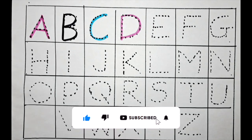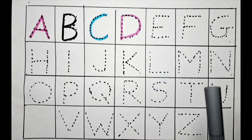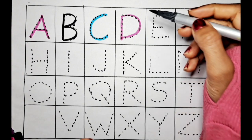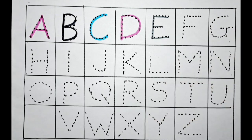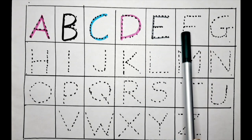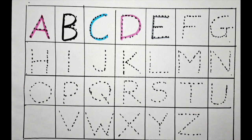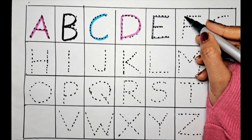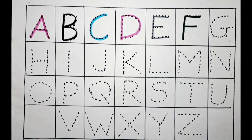Let's do the E with the gray color. E for elephant. The next letter is F. We will do it with the dark green color. F for flower.